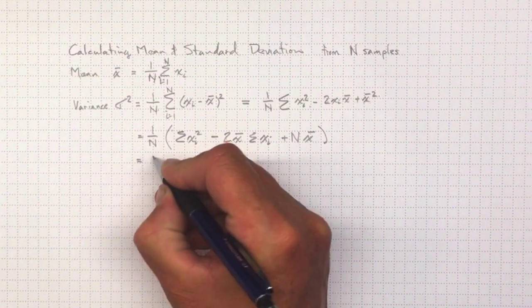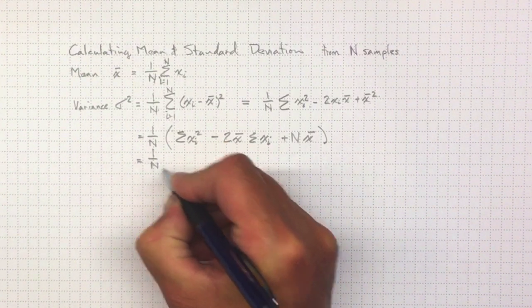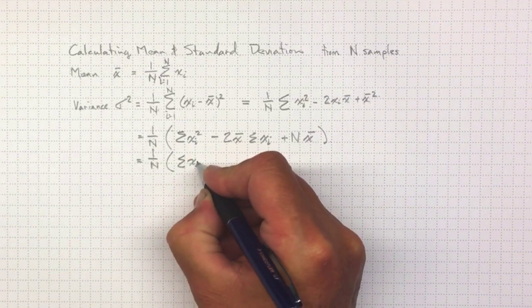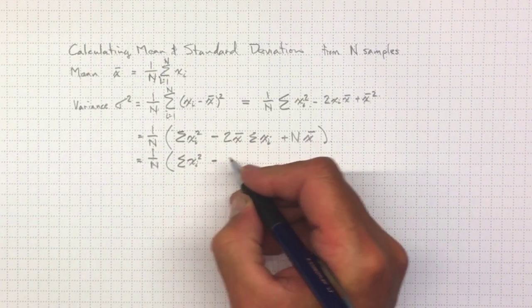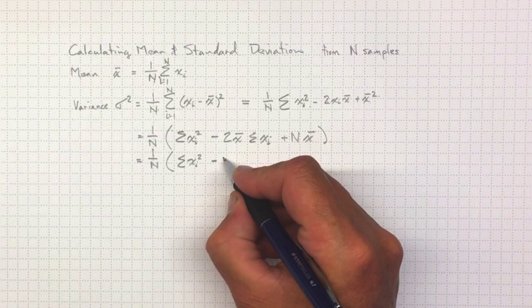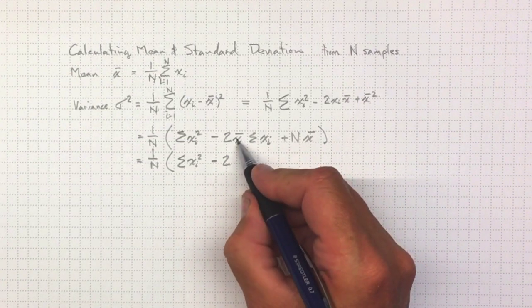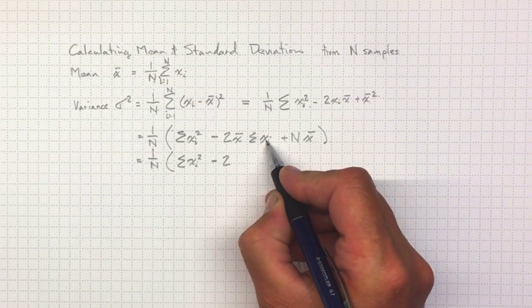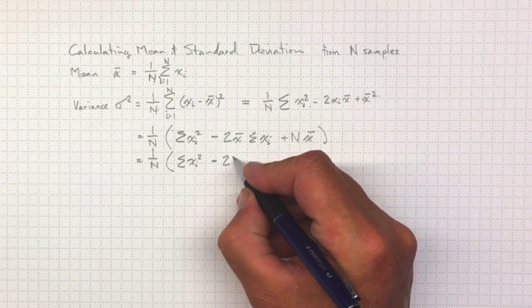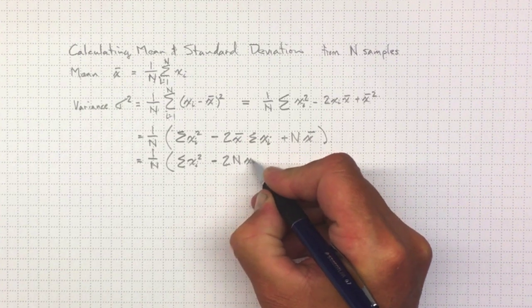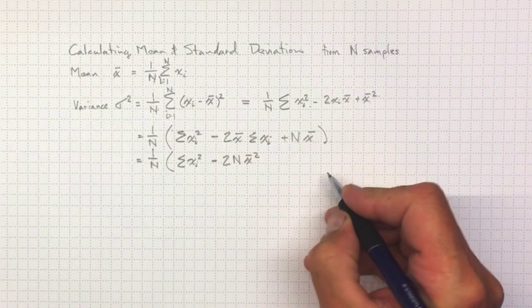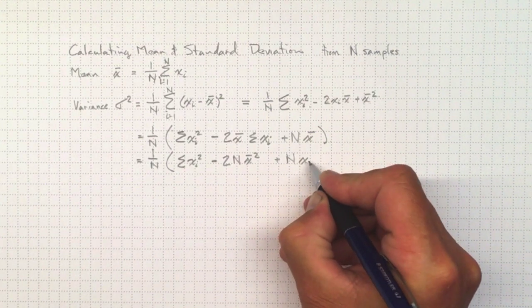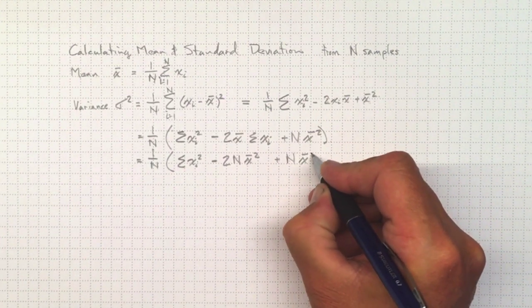So that'll be equal to 1 over n, the sum of xi² minus 2 times x̄, and that is just n times x̄, so minus 2n x̄² plus n x̄².